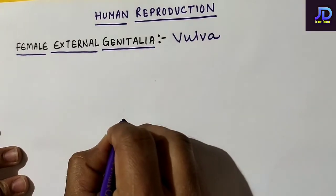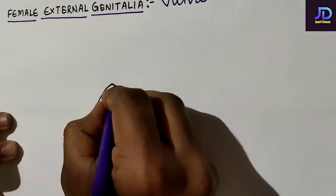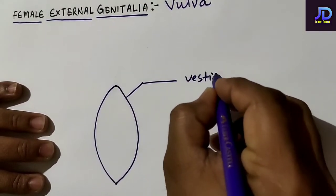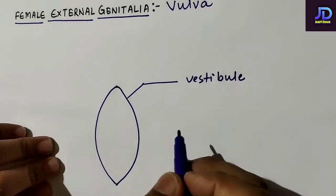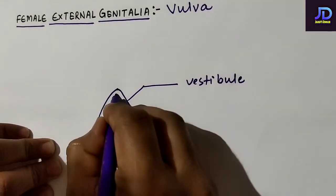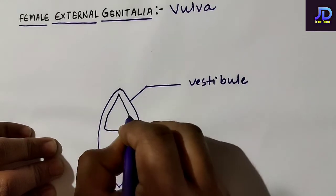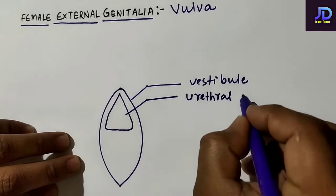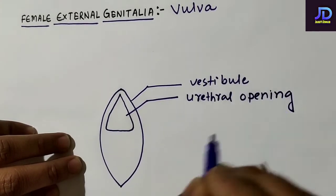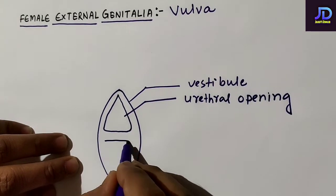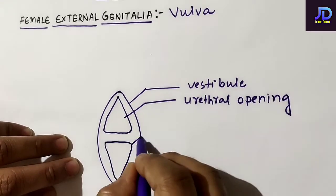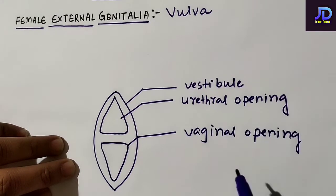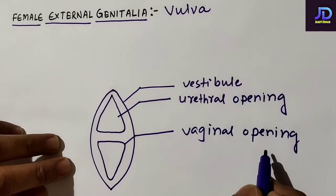In the female reproductive system there is a depression, and this depression is known as vestibule. In the vestibular region there are two openings. The upper opening is known as urethral opening or urethral orifice, and the lower opening is known as vaginal opening or vaginal orifice.